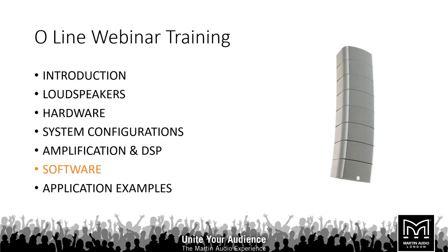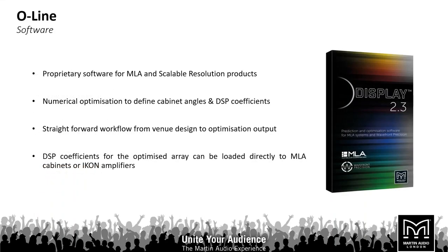There are a couple of pieces of software we might want to use to get our system up and running. The first is Display 2.3, which is the proprietary software not only for optimized O-Line systems but also for MLA and our Wavefront Precision series products. This software allows you to input venue data and array data, and it will be numerically optimized to define the cabinet angles and DSP coefficients. It has a really straightforward workflow from venue design to output, and these coefficients can be loaded directly into iKon amplifiers and DX4 processors.